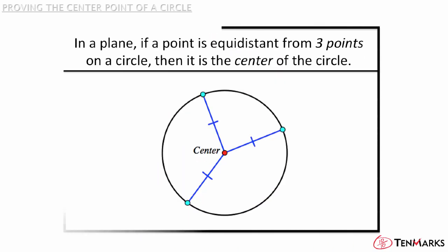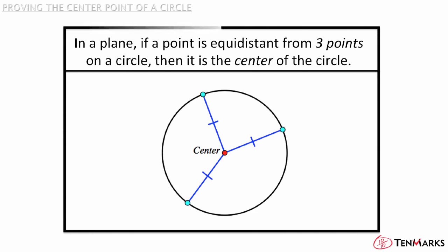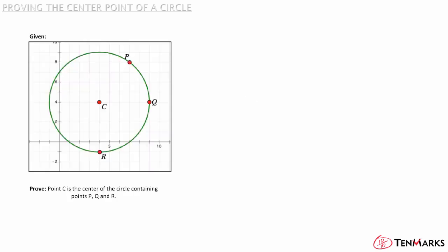The theorem states that in a plane, if a point is equidistant from three points on a circle, then it is the center of the circle. Using this theorem, try the following proof.